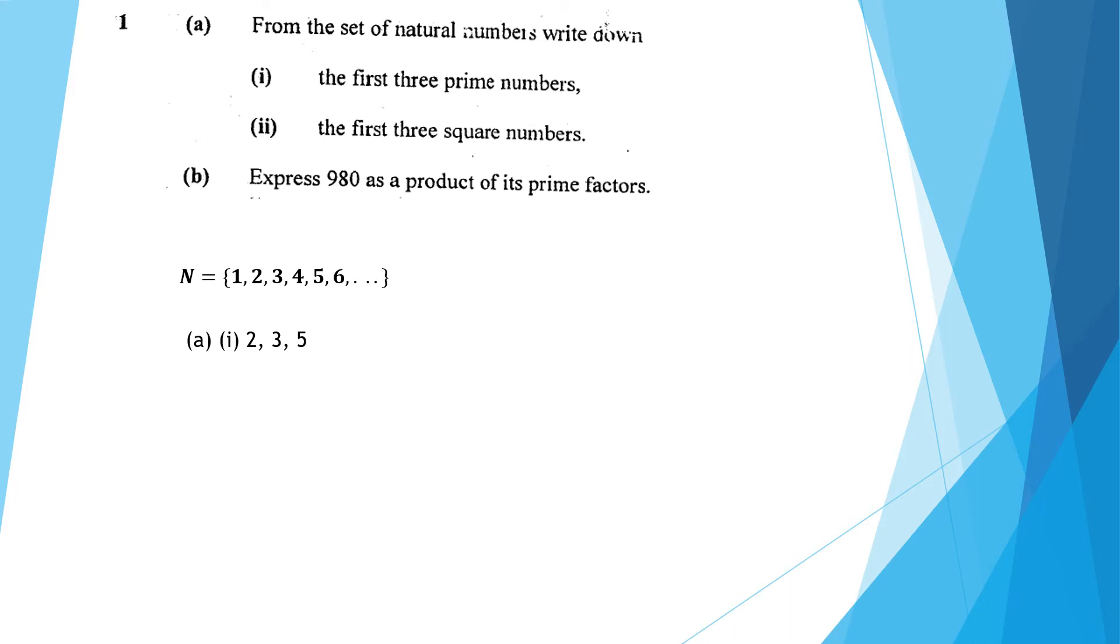The first three square numbers from the set of natural numbers are therefore 1, 4, and 9.